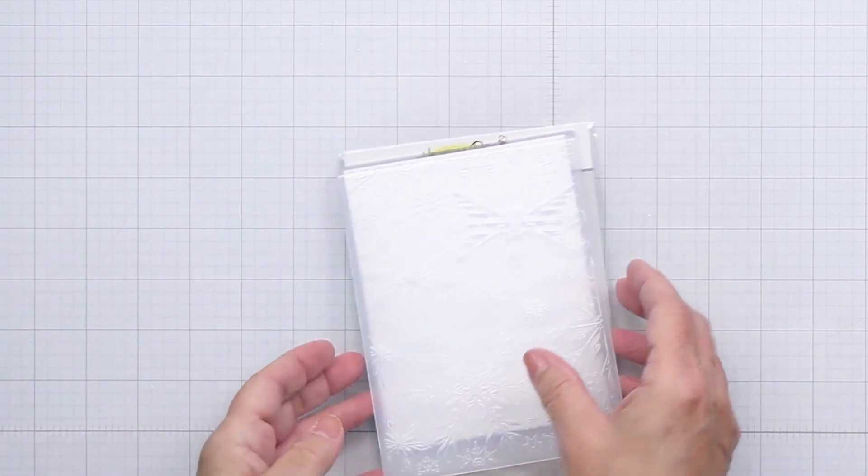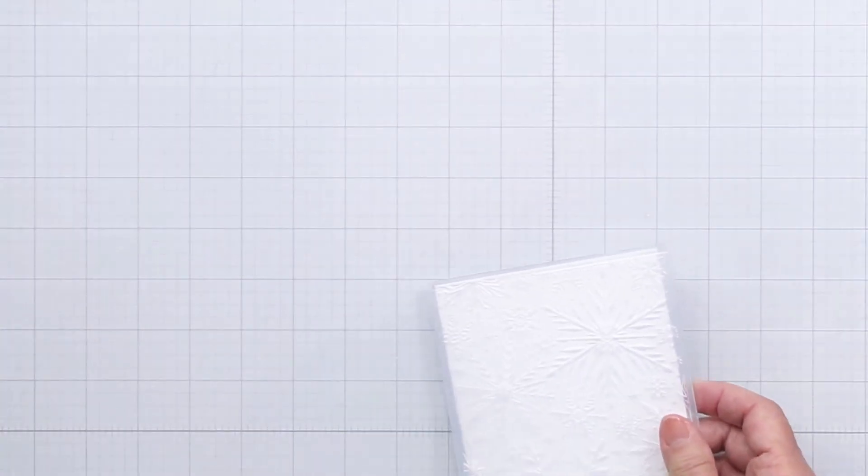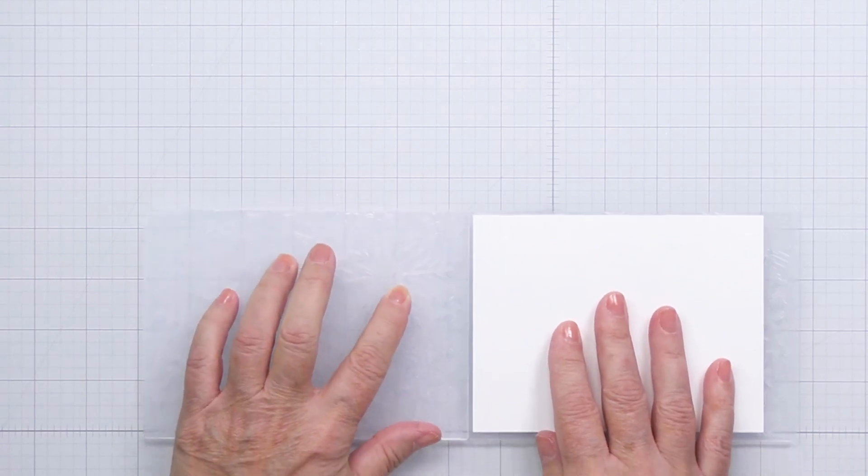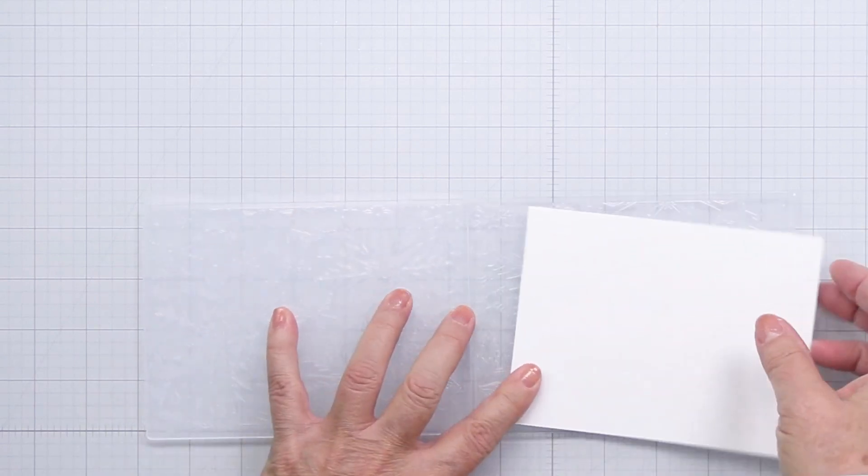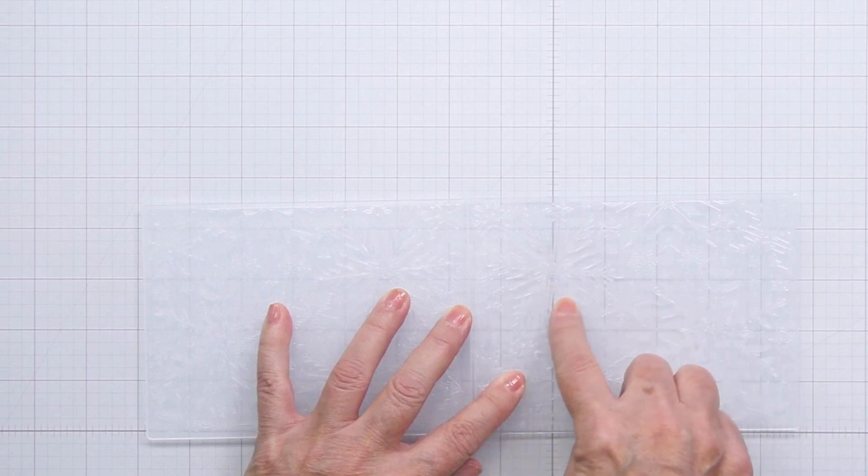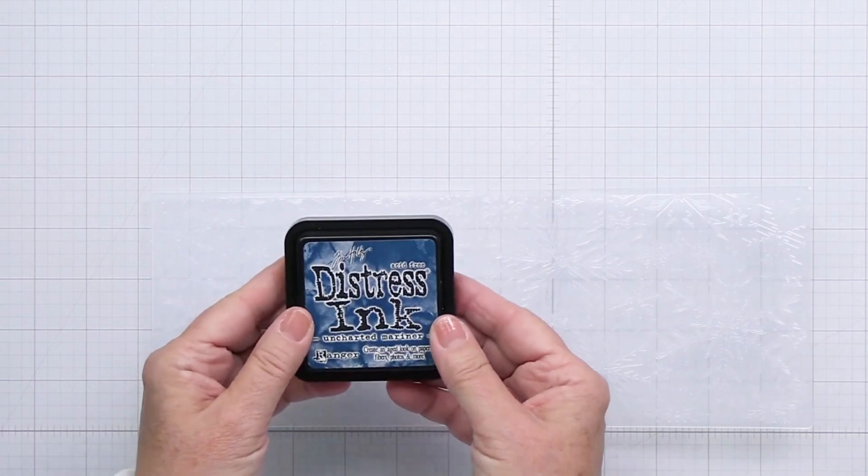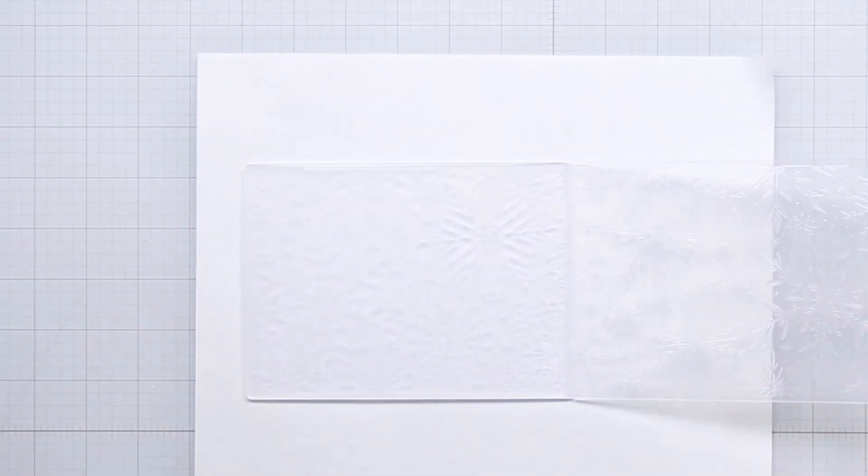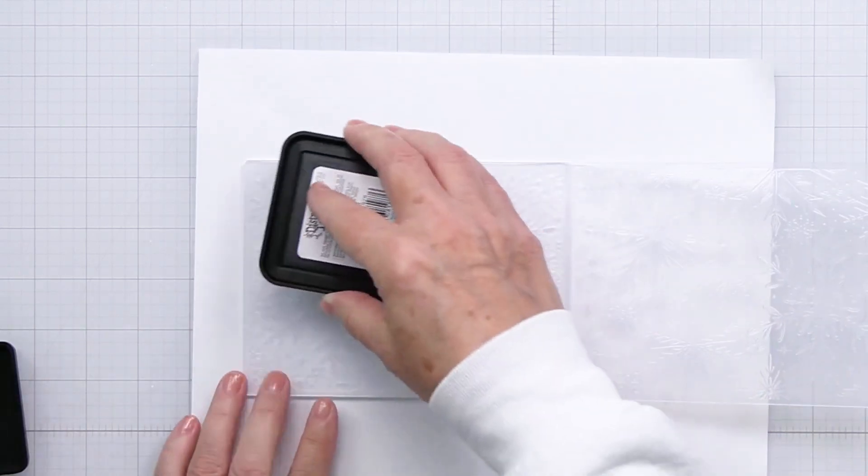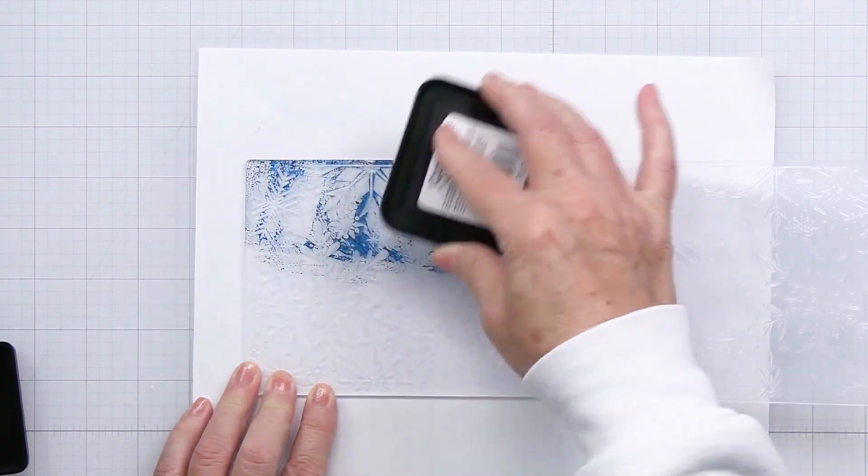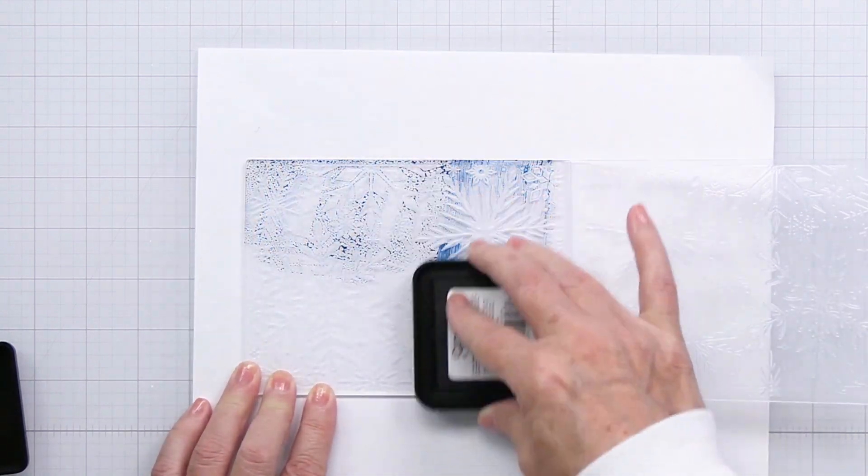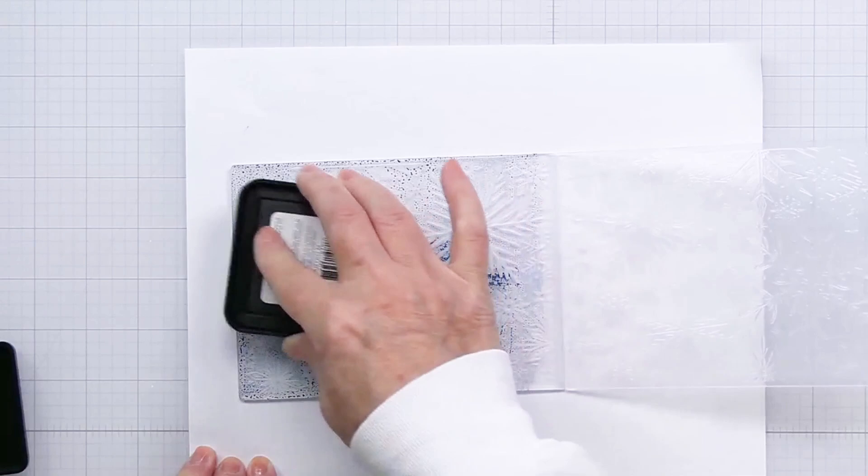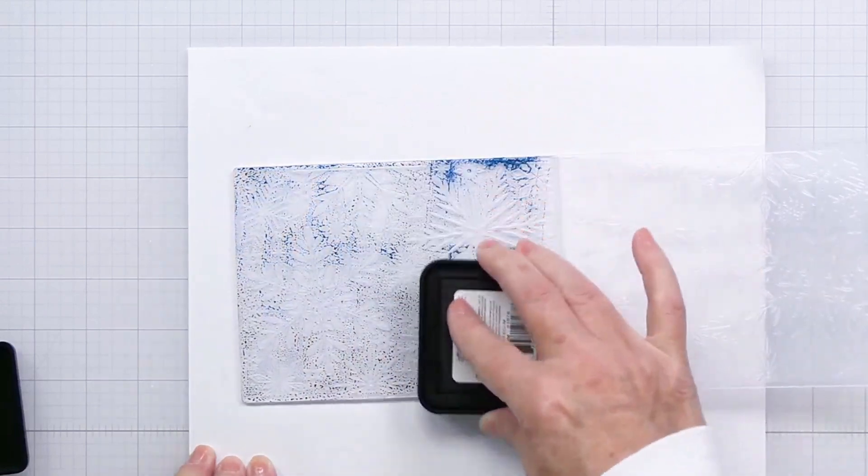I'm going to do a little bit of inking with this folder. On the left side of the open folder is the flat side, and on the right is the raised side. On that flat side I'm going to use some Uncharted Mariner Distress ink. I've placed the folder over a piece of copy paper just in case I get any ink over the edges, and I'm just taking that ink pad and squishing, twisting, and patting the ink onto the folder.